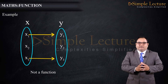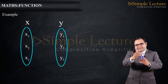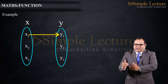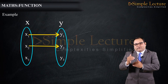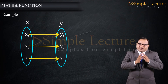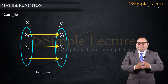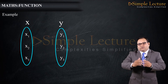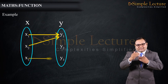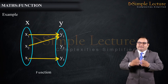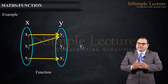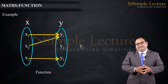In the third example, we can clearly see each element of set X has an image in set Y: x1 maps to y1, x2 maps to y2, and x3 maps to y3. So this is definitely a function. In the fourth example, two inputs can have the same output, so this is also a valid function, even though some elements in set Y may have no pre-image in set X.